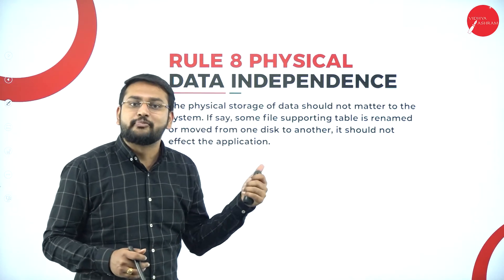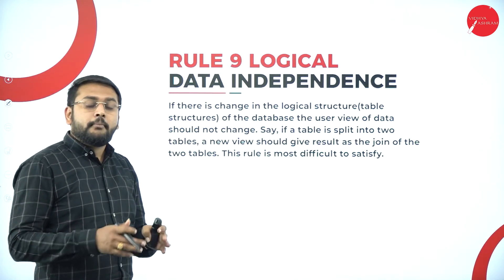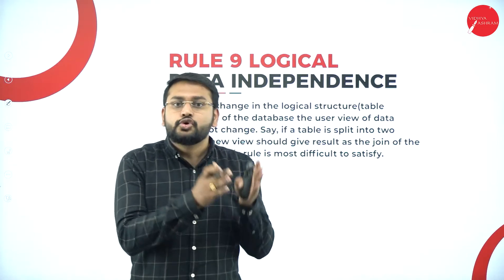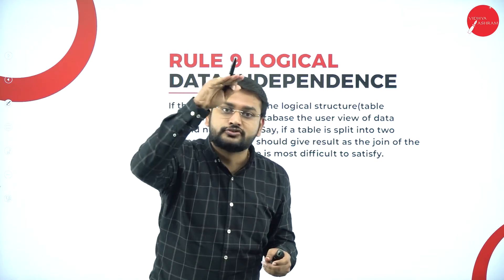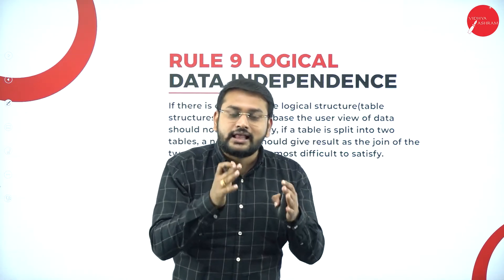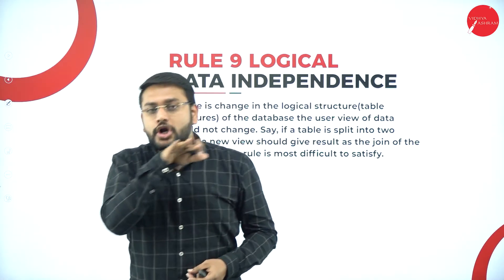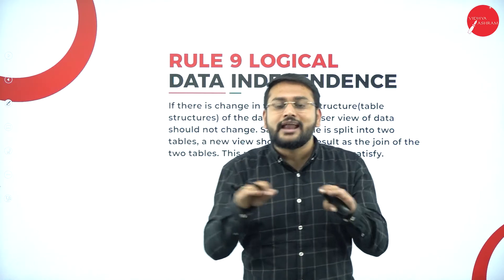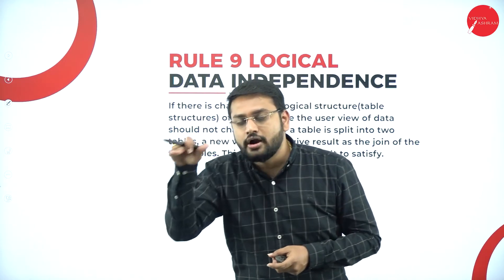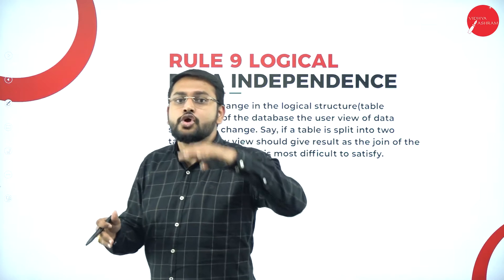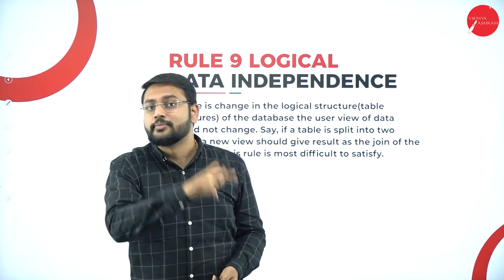Rule Number Nine is Logical Data Independence. Imagine the data is in one table that the user is viewing. If I split that table into two tables at the logical level, the user's view should not get disturbed. The user shouldn't need to know that the data is now coming from two different tables — the user view should not be affected by changes at the logical level.